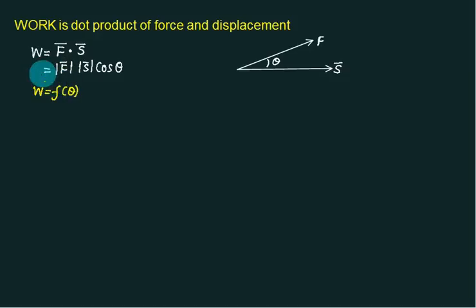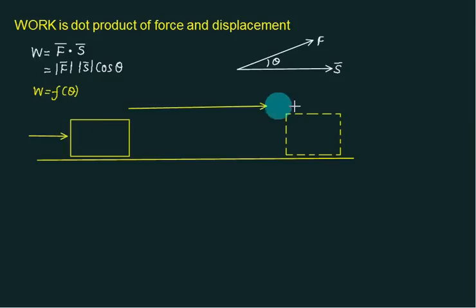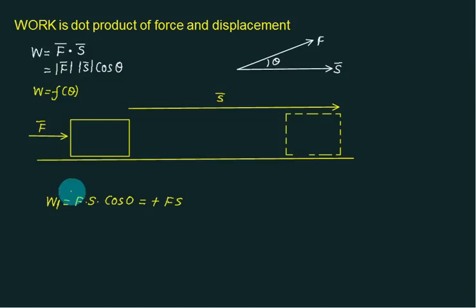According to that, work can be positive, negative, or zero — all possibilities exist. If a block moves from this position to a final position and I apply the force in the same direction as displacement, the angle between them equals 0. So W1, the work due to force F, equals F times s times cos0, which is 1. Therefore W1 = F·s.